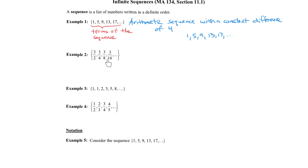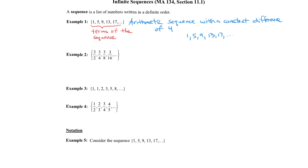Here's another sequence. This one is not an arithmetic sequence because we're not adding a constant number — we're actually multiplying by a constant number. To get from one term to the next, I multiply by one half each time. So this is called a geometric sequence with a ratio of one half.